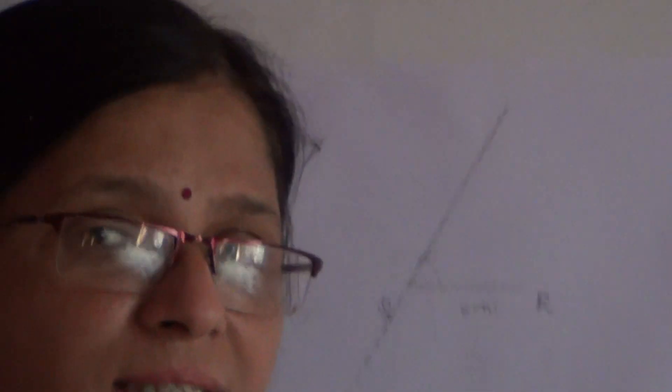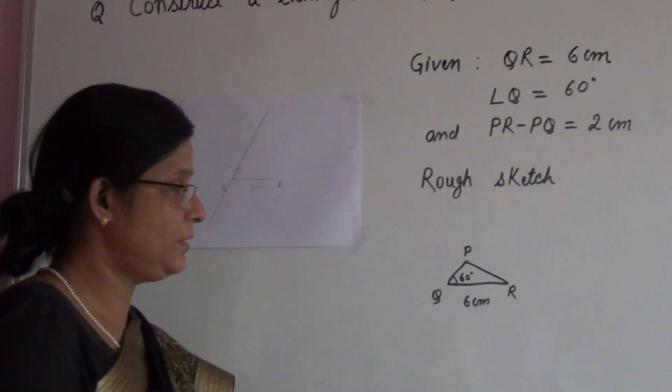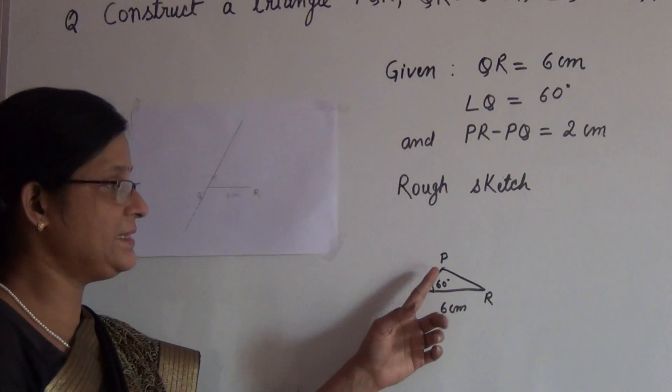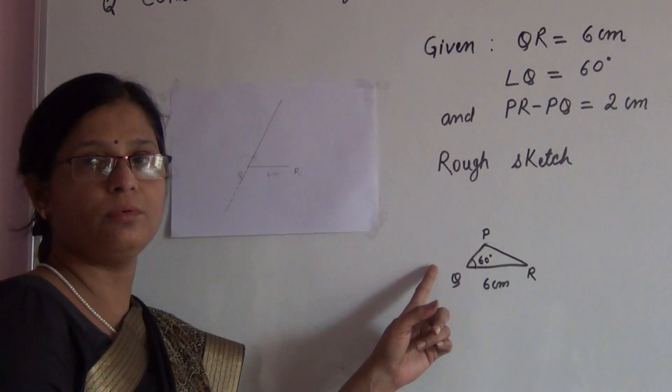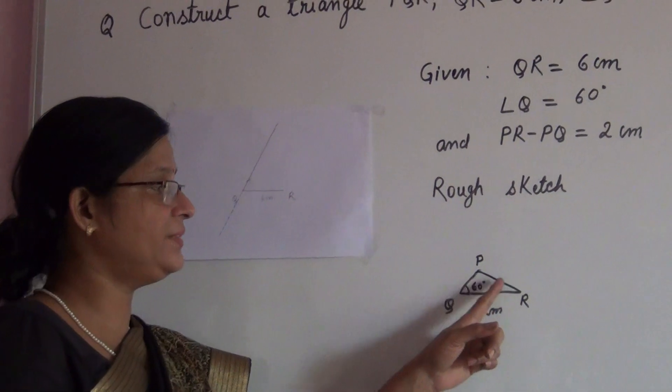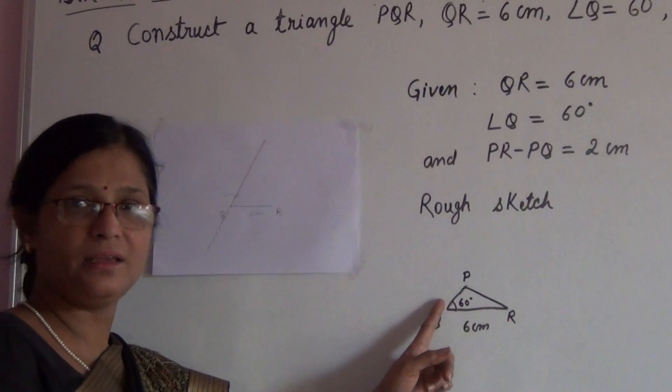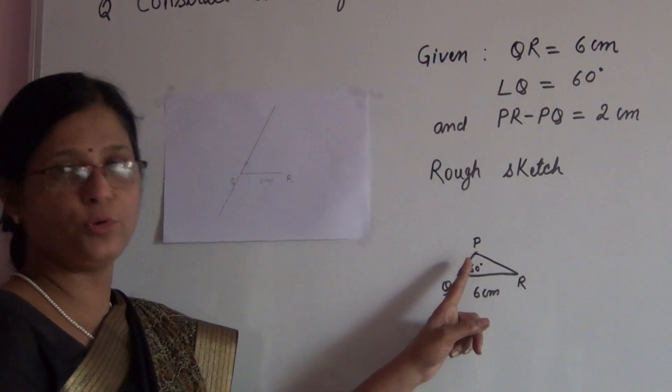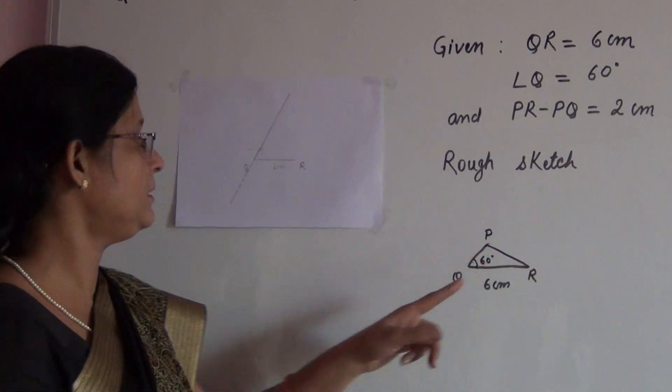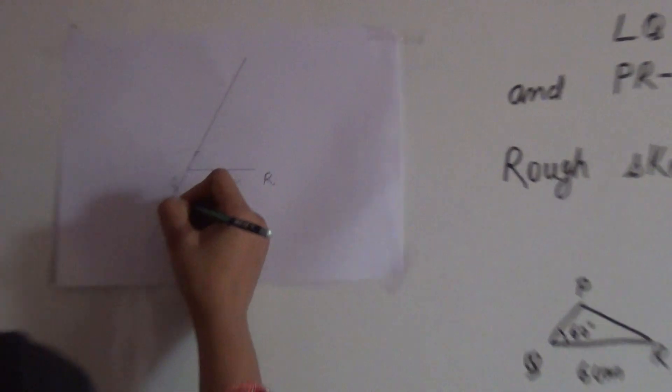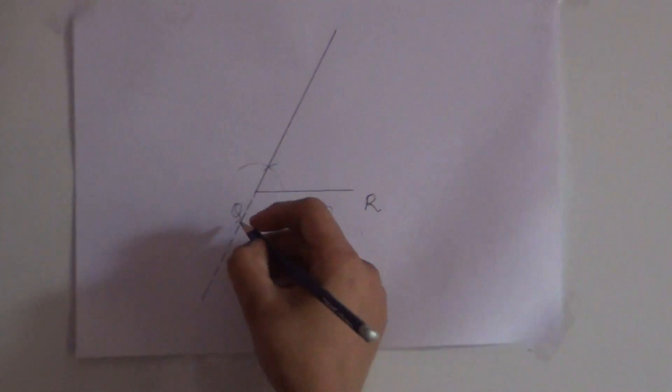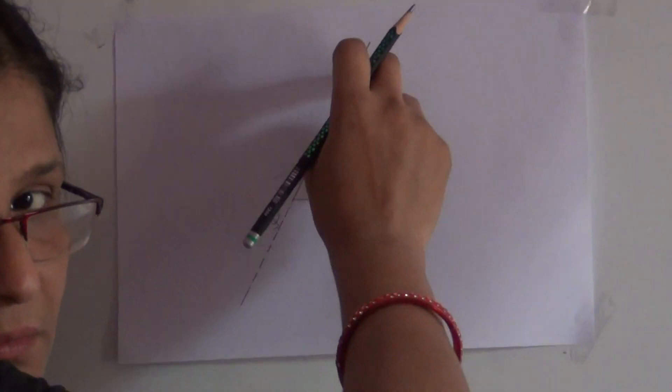Why I have done this, let me explain it to you. It is given we can see here that PR is longer than PQ. That is, the difference of these two is 2 centimeters. In case the side opposite to the angle is longer, we need to cut the difference, the intercept equal to the difference, on the backward side of the actual line.